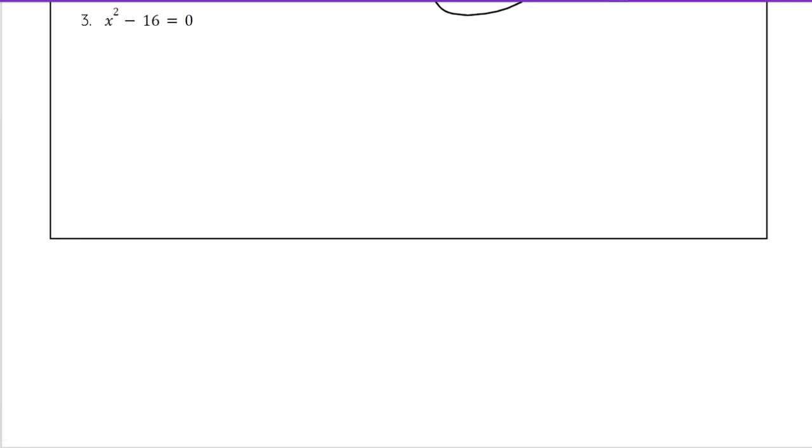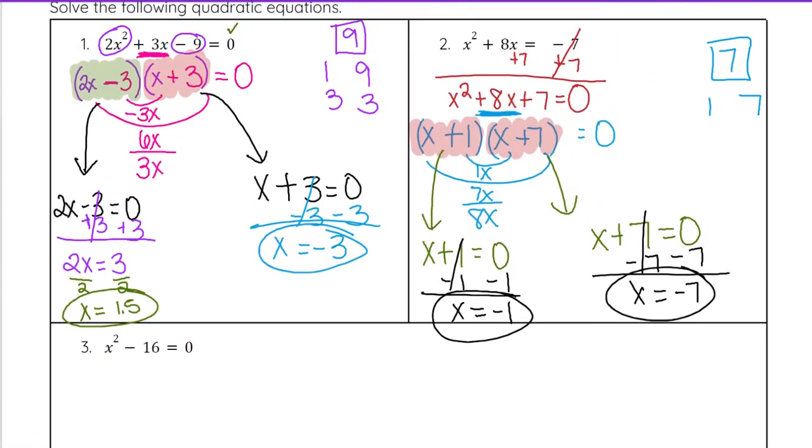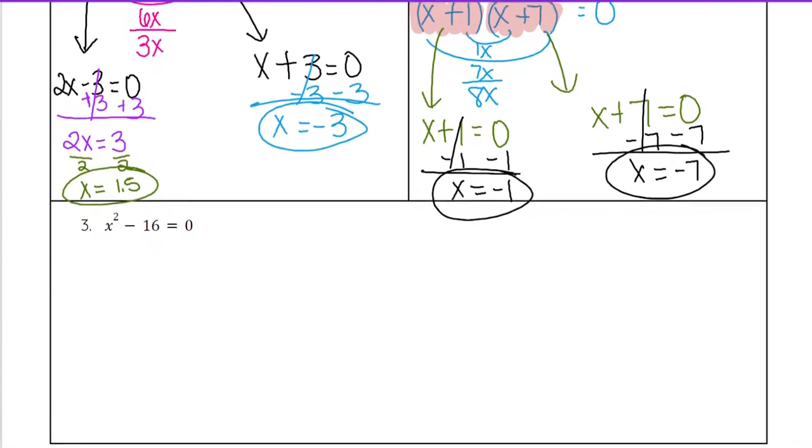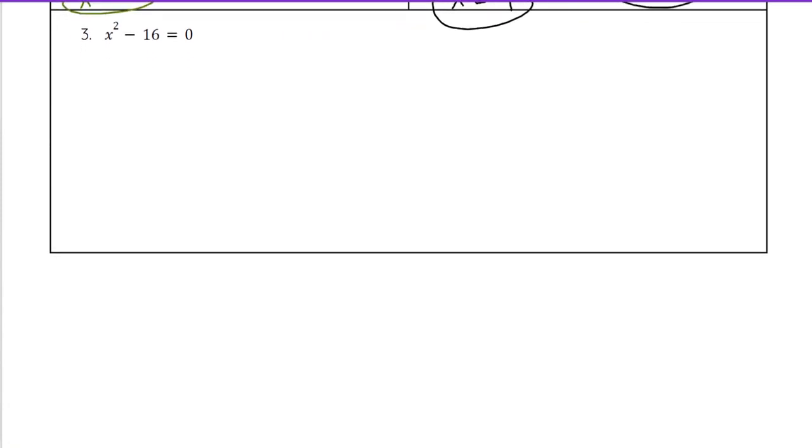Let's look at one more example. Number 3, we see x² minus 16 equals 0. This one looks a little bit different than the last two that we did because it only has two terms, whereas these last two, when we had 0 on one side, the other side had three terms. So, you have a few options with factoring. x² minus 16, you can set it up as x² plus 0x minus 16 equals 0.